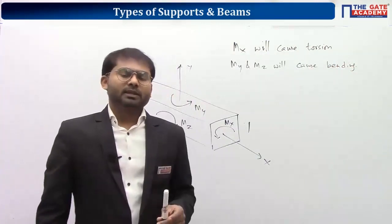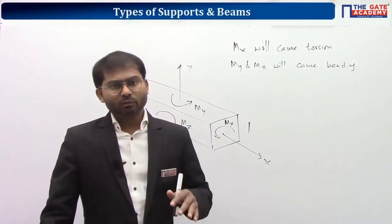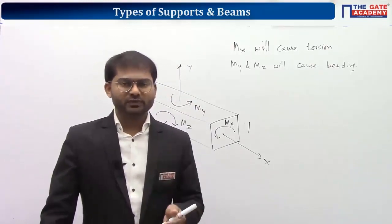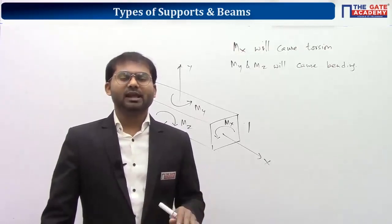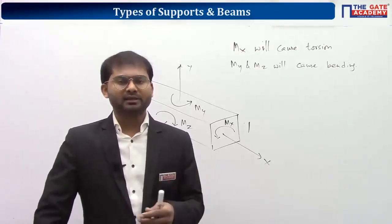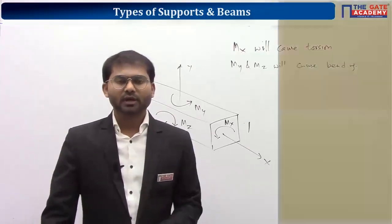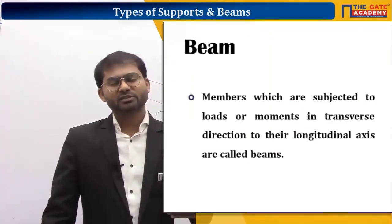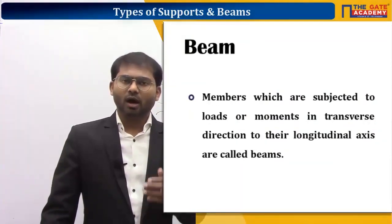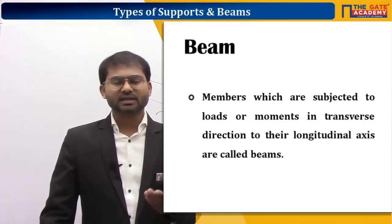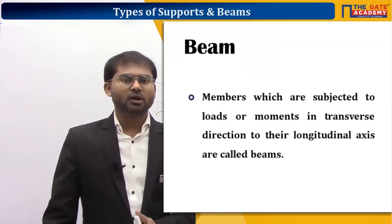We now understand two things: if the load is acting along the transverse axis, bending will happen; if the moment is acting about the transverse axis, bending will also happen. Bending is a phenomenon that occurs when loads or moments act along or about the transverse axis respectively. The technical definition of beam: the member which experiences loads in the transverse direction or moments about the transverse axis.